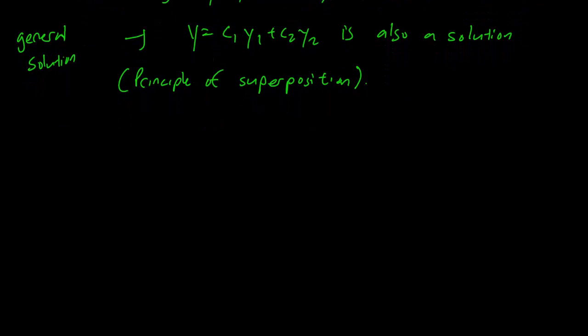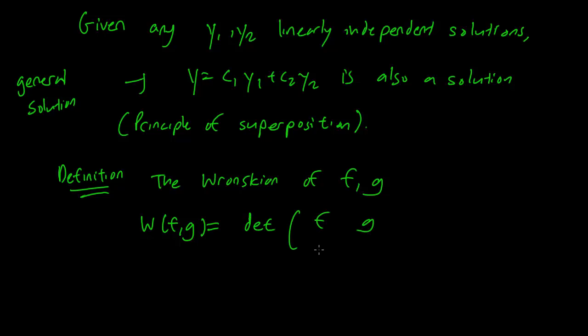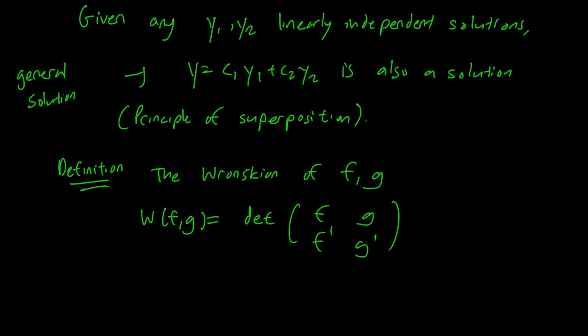Now one other thing I'm going to introduce here is the idea of a Wronskian. So how do you tell whether y1 and y2 are linearly independent or not? The Wronskian of two functions f and g is labeled W(f,g) equals the determinant of the matrix [f, g; f', g'], in other words fg' minus f'g.